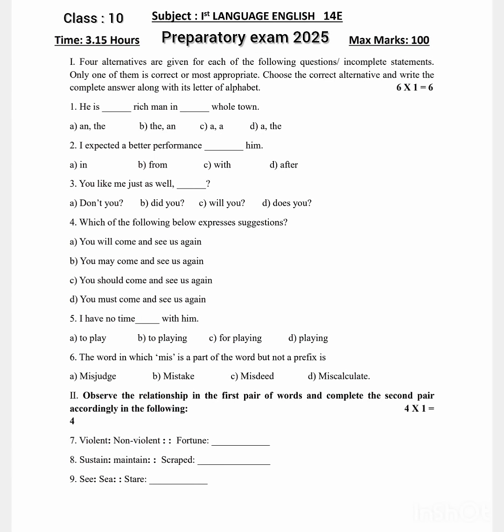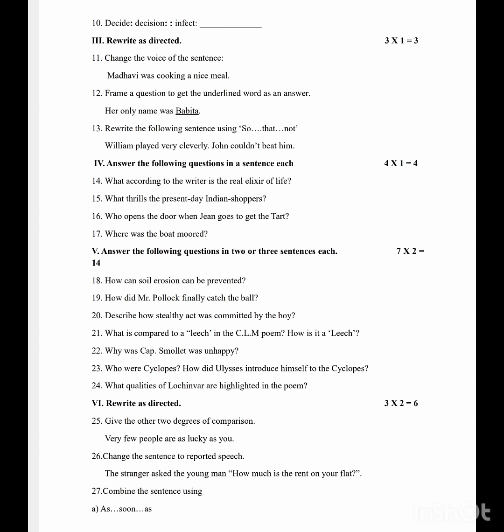Hello everyone, welcome to my YouTube channel. It's Dhippa Teru Sarina. Today we're covering the preparatory exam for Class 10, First Language English question paper. Total marks: 100. The first main question is choose the correct answers, eight questions. Second main: observe the relationship in the first pair of words and complete the second accordingly in the following.